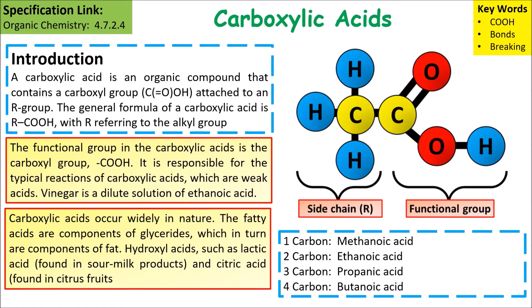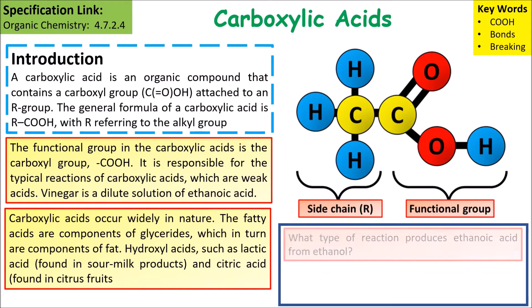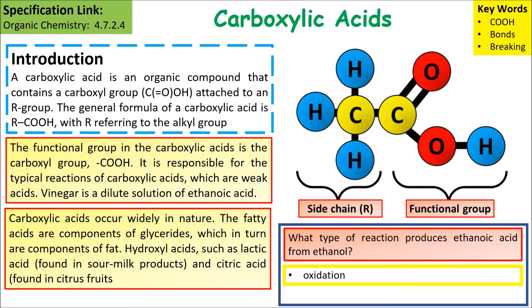If you have a carboxylic acid with one carbon it would be methanoic acid, two carbons would be ethanoic, three carbons propanoic, and four carbons would be butanoic. The reaction that produces ethanoic acid from ethanol would be oxidation.